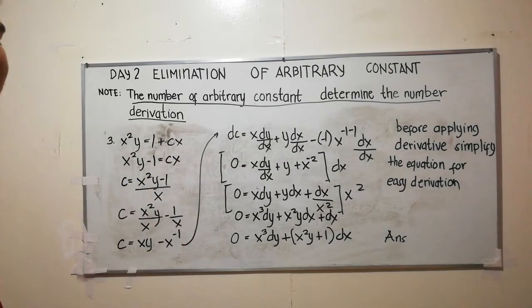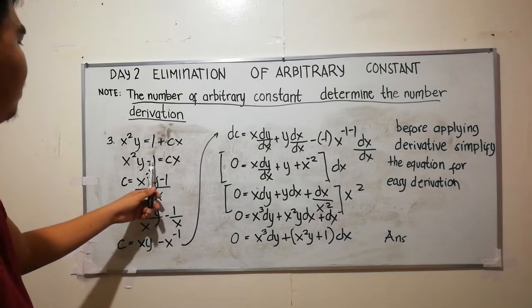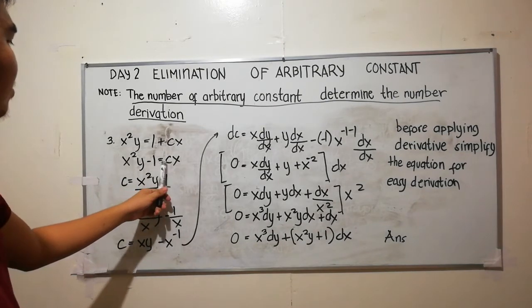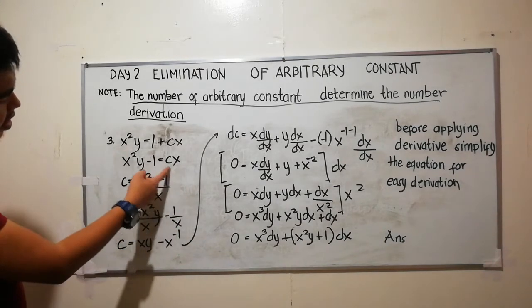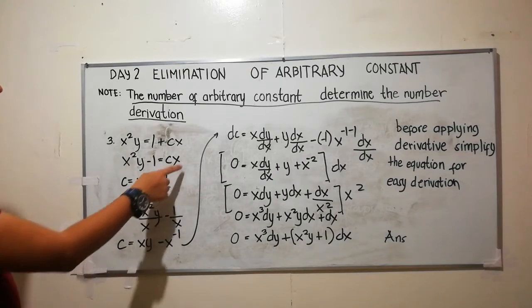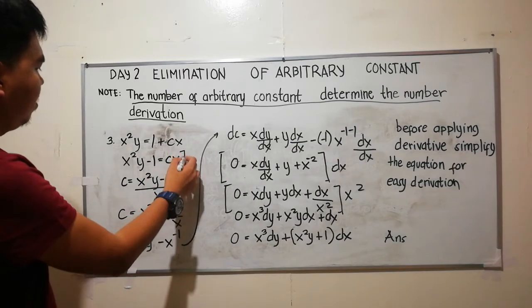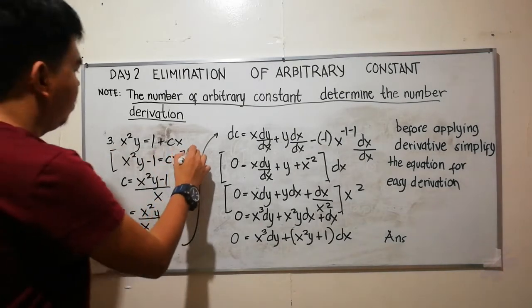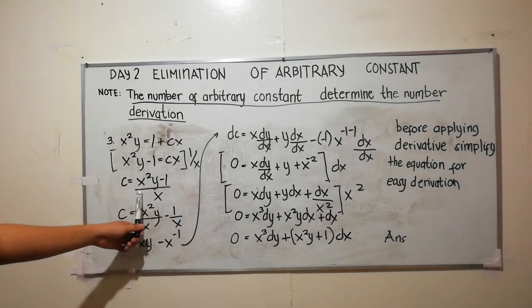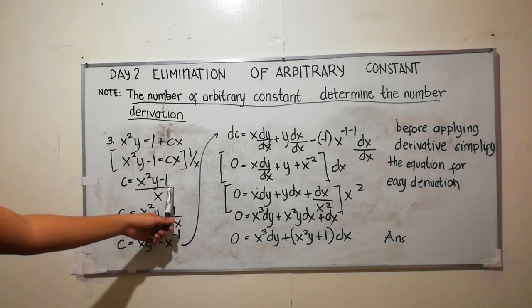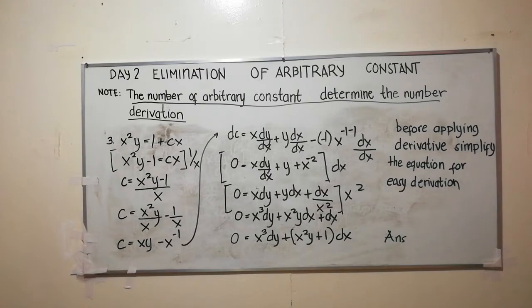Rearranging, x squared y minus 1 is equal to cx. We then divide the whole equation by x, so c is equal to x squared y minus 1 over x.